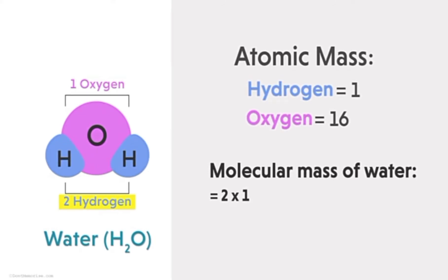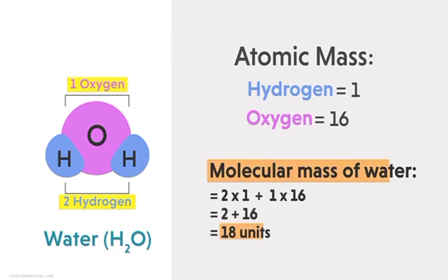Since there are two atoms of hydrogen, the hydrogen mass is equal to 2 times 1, and there is only one oxygen atom, so oxygen mass is 1 times 16. So 2 plus 16 equals 18 units — this is the molecular mass of water.